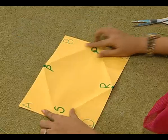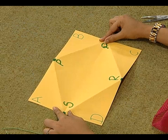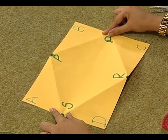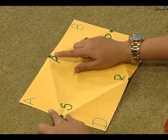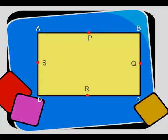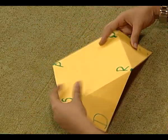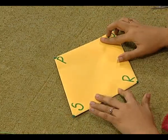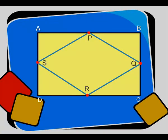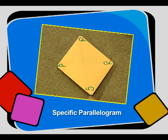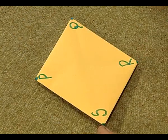What if we take ABCD as a rectangle? Do the same activity on ABCD which is a rectangle. Mark midpoints P, Q, R, and S. Join the midpoints by paper folding. Obviously, we will obtain a parallelogram, but this is a specific parallelogram. We will again explore the properties of P, Q, R, S using a piece of thread.